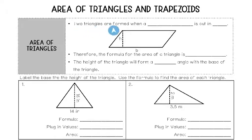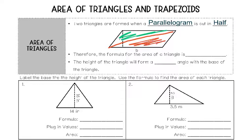First of all, two triangles are formed when a parallelogram is cut in half. If I take this parallelogram and cut it in half, I have this triangle in red and this triangle in green. Since I got that by cutting the parallelogram in half, the formula for the area of a triangle is one half times the base times the height. So half the base times the height is how you find area of a triangle.